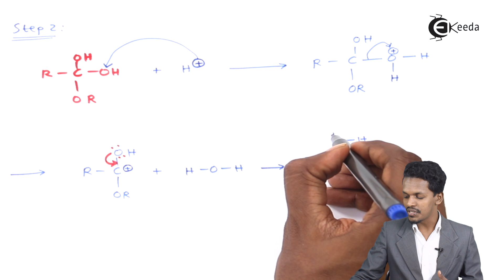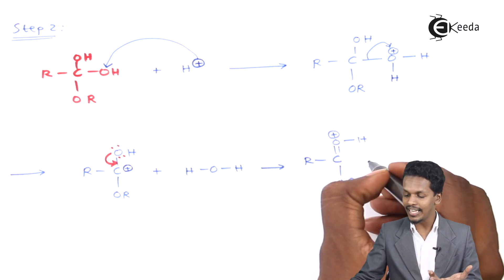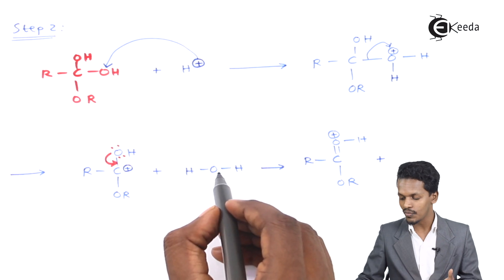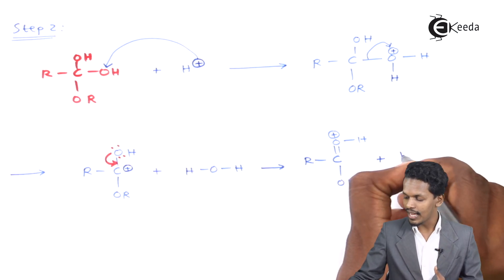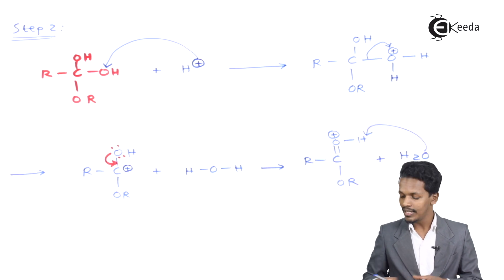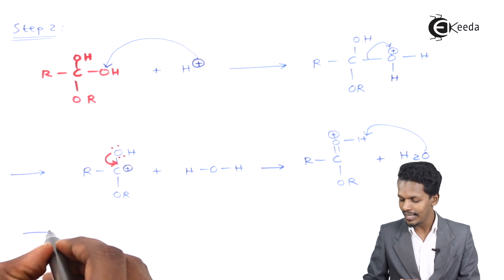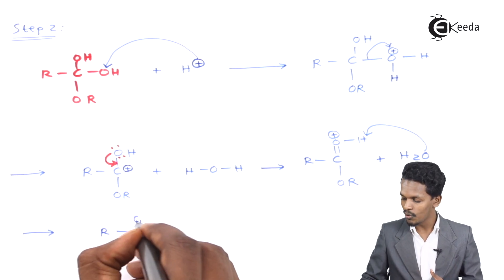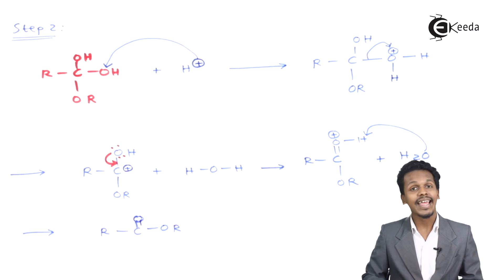This gives RC(=O⁺H)OR', where the oxygen still carries a positive charge. A water molecule then removes the hydrogen as H₃O⁺, and the final product obtained is RC(=O)OR', which is the ester.